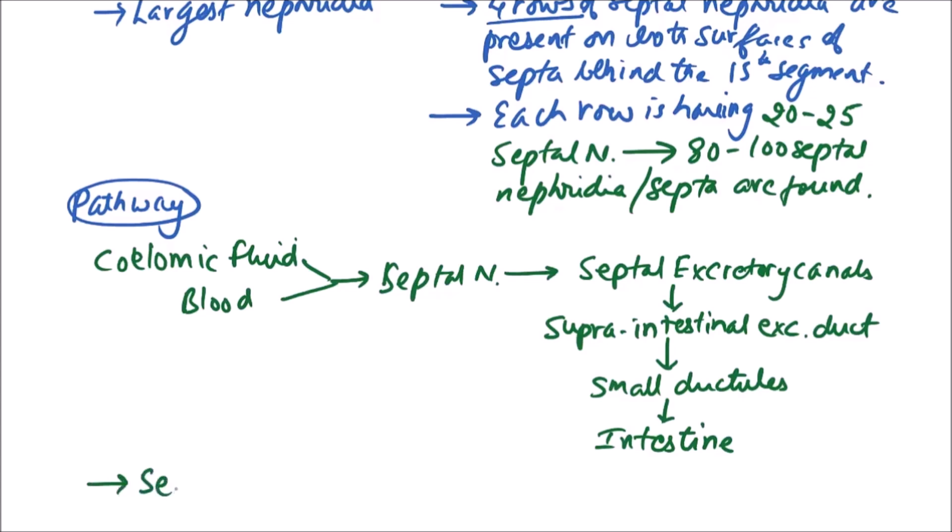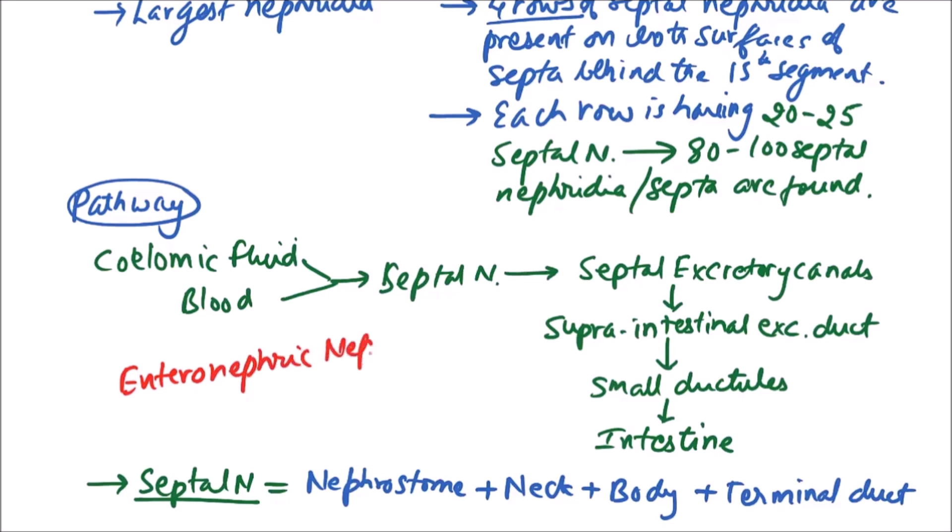Septal nephridia is divisible into four parts: nephrostome, neck, body and the terminal duct. Important thing is that as it is opening in the gut these are enteronephric type.